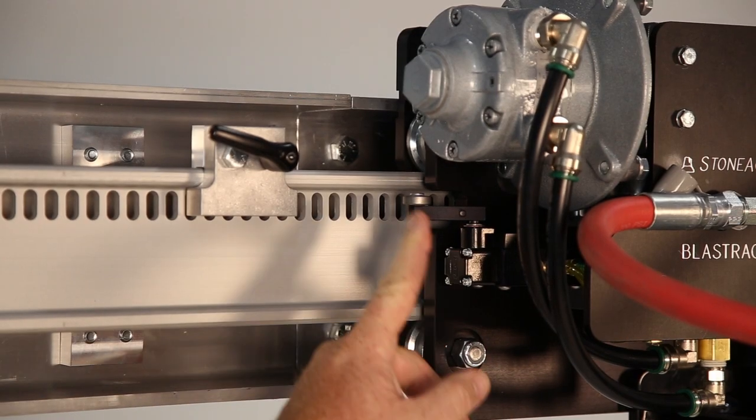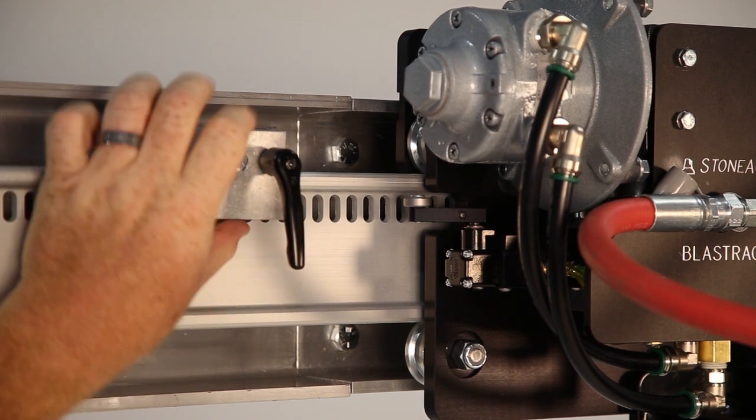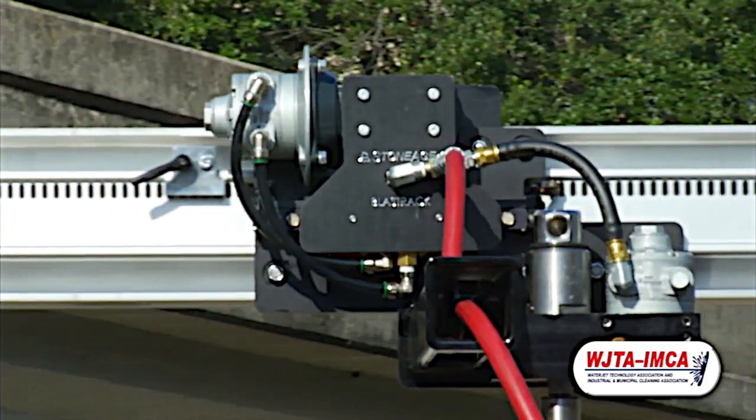The tractor has an automatic return switch on each side. You just need to set the movable stops to match the length of your tube bundle and the Bundle Blaster will automatically reverse direction when it reaches the end of the bundle.